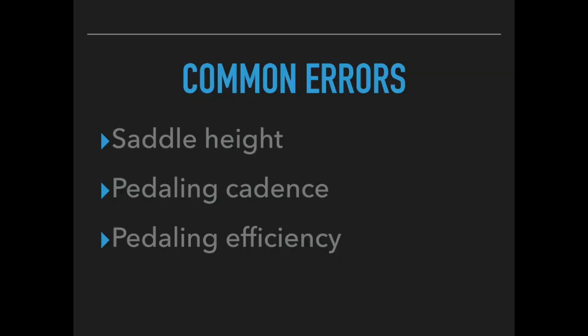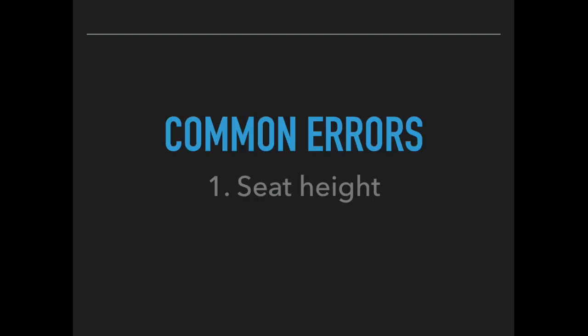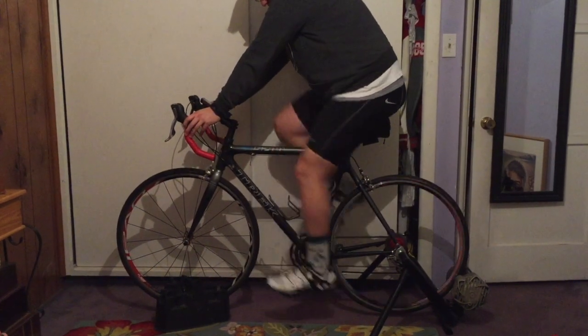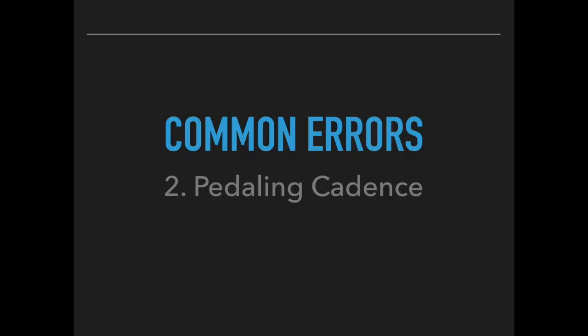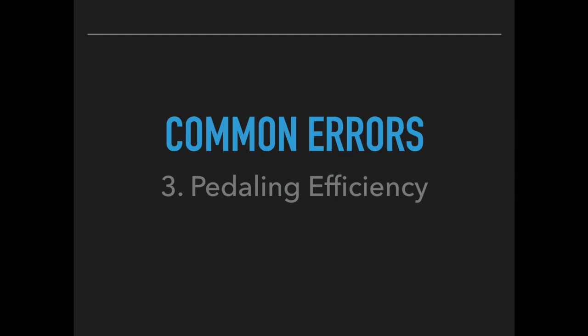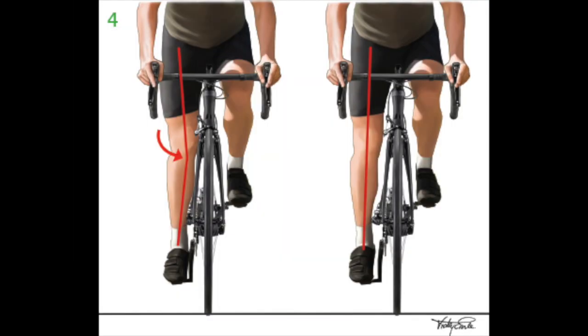Common errors seen in cycling include incorrect seat height, incorrect pedaling cadence, and inefficient pedaling mechanics. These can be corrected by performing a bike fitting that allows for proper seat height, which will increase force and allow for pedaling efficiency within a single plane. Instructions should be given encouraging the rider to pedal faster on an easier gear to increase cadence. Instructions on pedaling efficiency would also help to streamline leg movements and decrease extra movements in unnecessary planes.